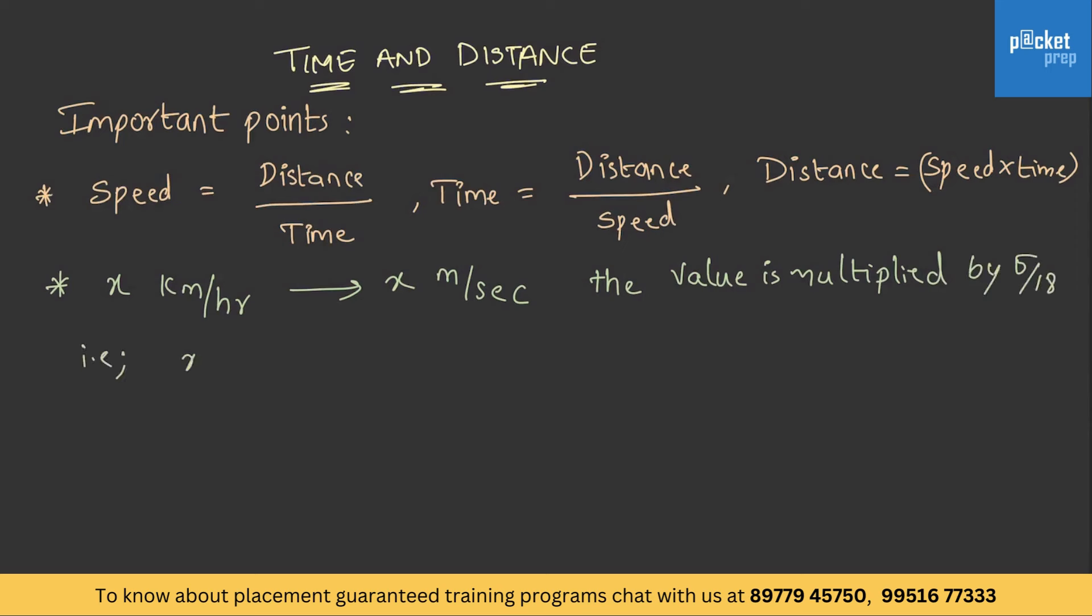That is, x into 5 by 18 meters per second. And vice versa. If it should be converted from x meters per second to x kilometers per hour, then it is x into 18 by 5 kilometers per hour.